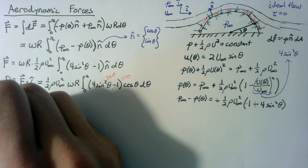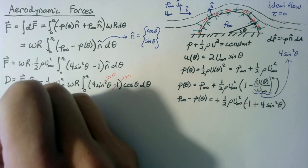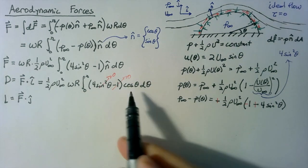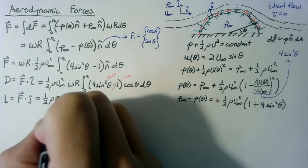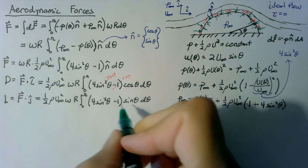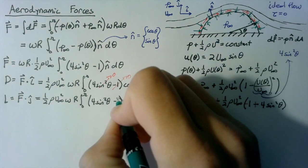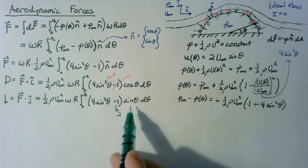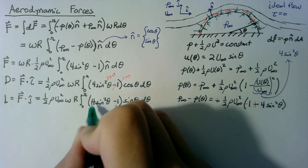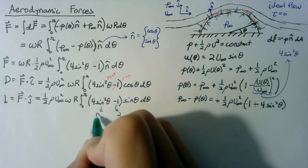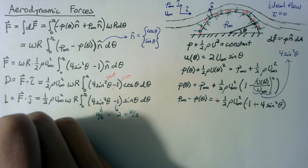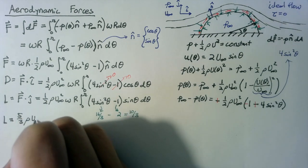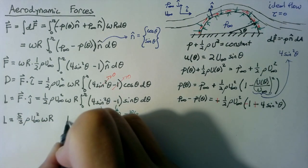Lift is the force component in the j direction. We rewrite the expression but use the j component of n̂, which is sine theta. Integrating sin θ from 0 to pi gives 2; integrating sin³θ from 0 to pi gives 4/3. So 4 times 4/3 equals 16/3, and subtracting 2 gives 10/3. Our lift ends up being 5/3 multiplied by all our constants, and our drag is equal to 0.